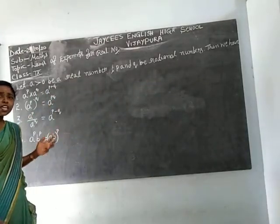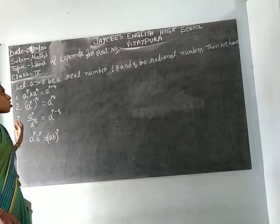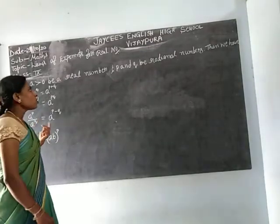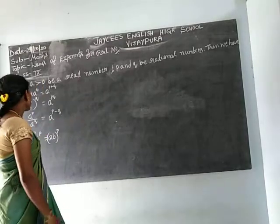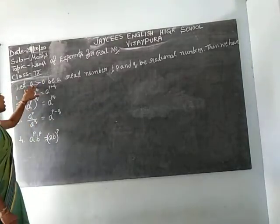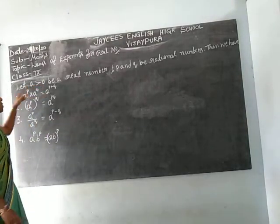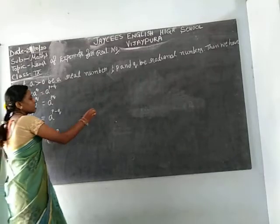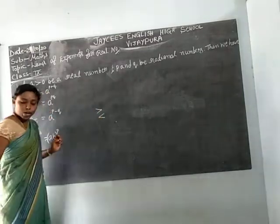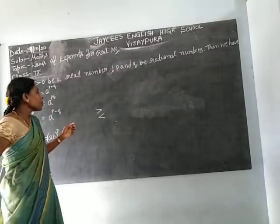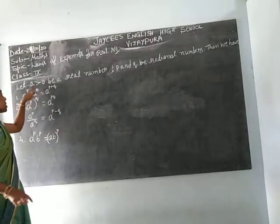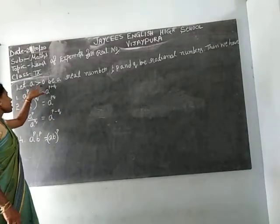We will learn rational numbers in class. The numbers to the power 0 — we will learn that. Let A be greater than 0. This symbol means greater than, this means less than, and this means equal.